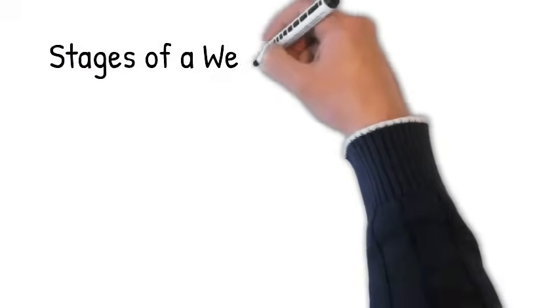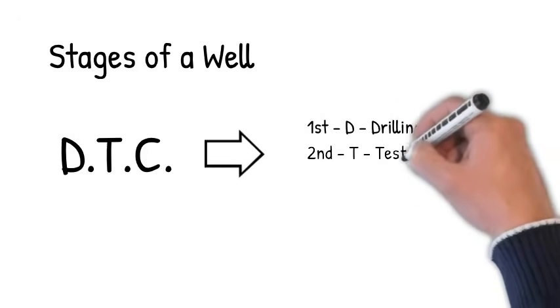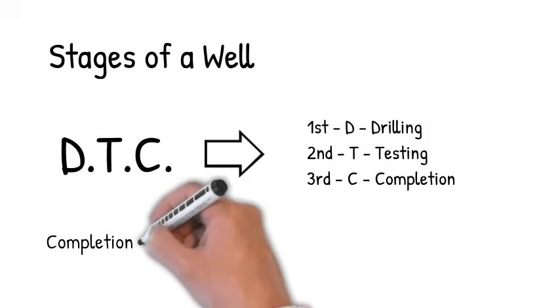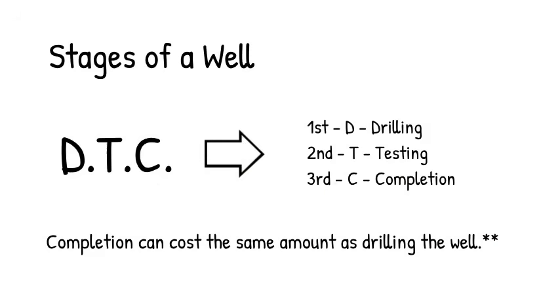Next we will discuss the production side of an E&P project. The stages of a well, DTC. First we drill, second we test the oil, third we complete the well. Completion can cost the same amount as drilling the well.